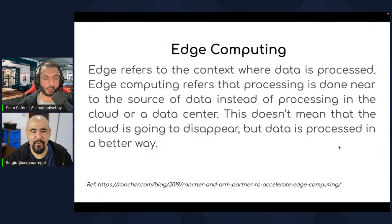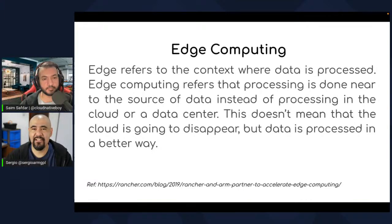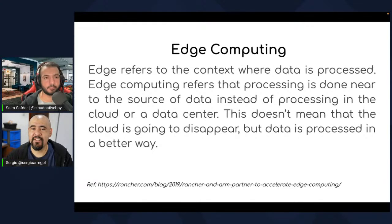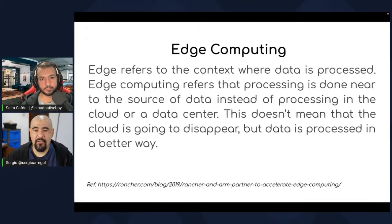Just to have some context, maybe some of us don't know what edge computing is, what Kubernetes is behind it, and what is the relation between these concepts. Edge computing is more like processing the data near the edge or near the source of the data. Instead of getting information from some system, processing it to the cloud, and then returning the information close to the client, in edge computing you process the information close to the source of the data. That's the strategy in edge computing.